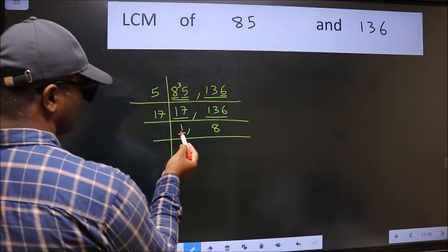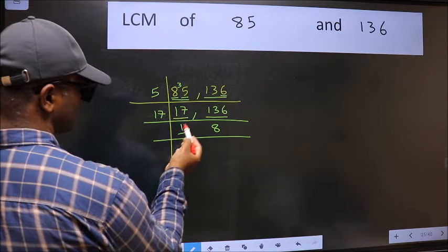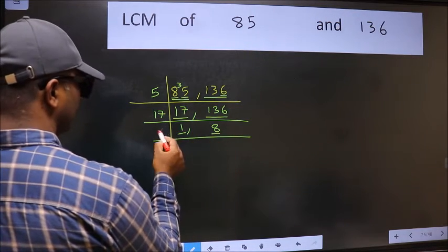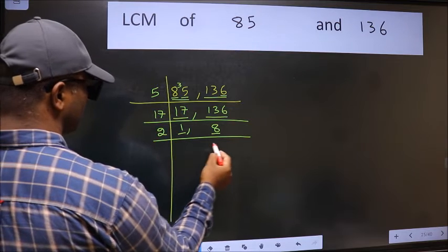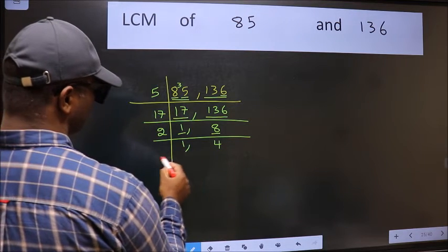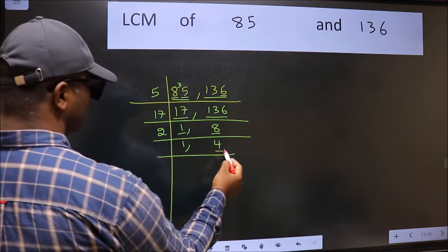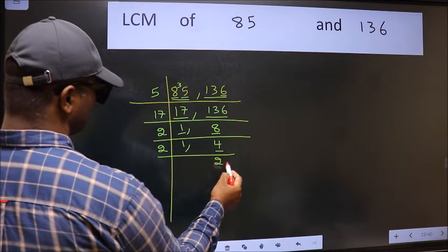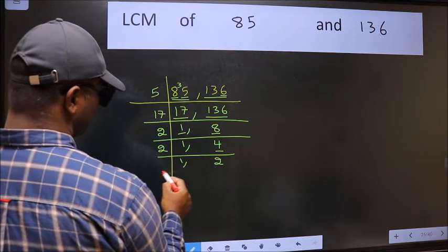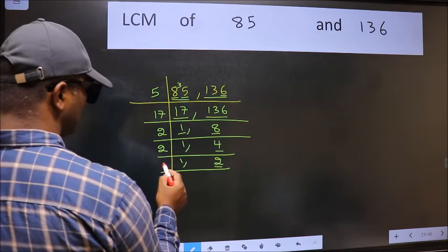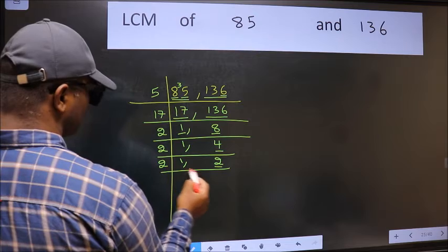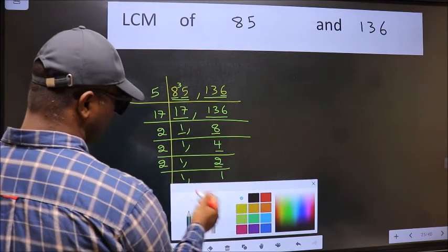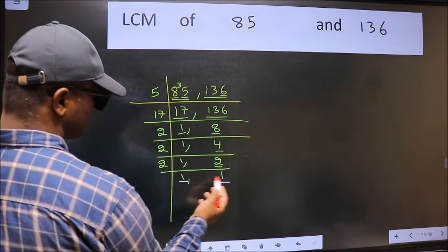Now we got 1 here, so focus on the next number, 8. 8 is 2 fours, giving 8. Now here we have 4. 4 is 2 twos, giving 4. Now here we have 2; 2 is a prime number, so 2 ones give 2. Now we have 1 in both places.